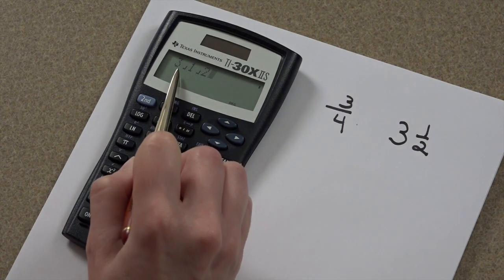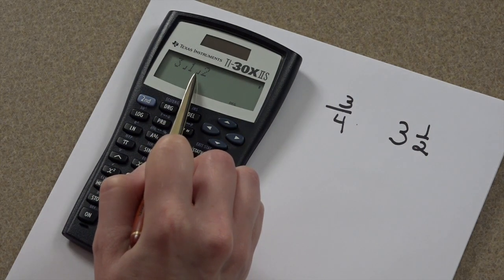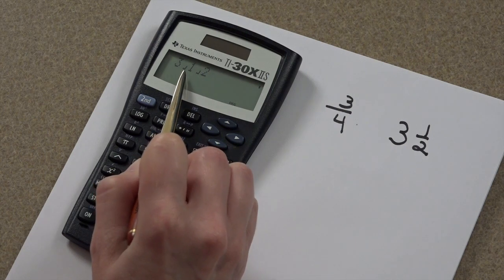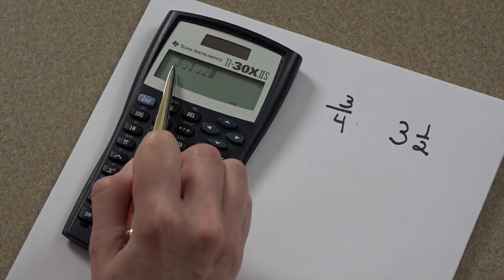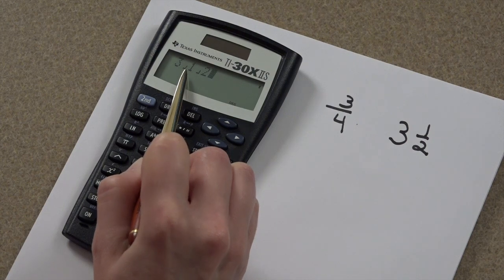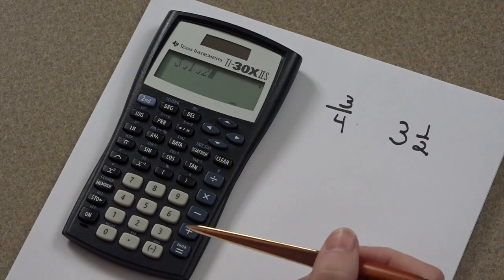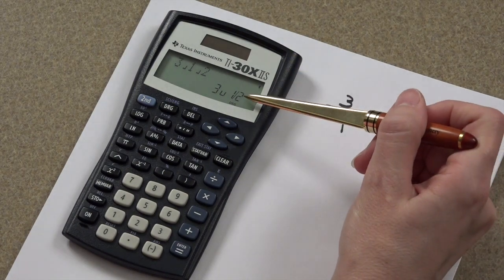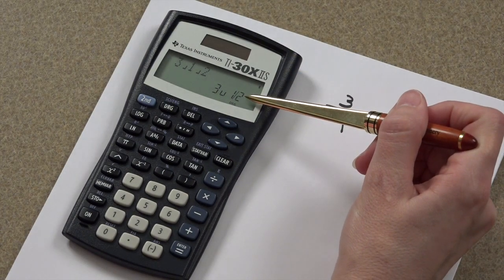Now notice those separation marks are the same. It really doesn't matter. All your calculator knows is that this is your whole number, this is your numerator, and this is your denominator. Press enter, and that is how your fraction looks as a mixed number.